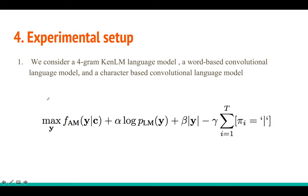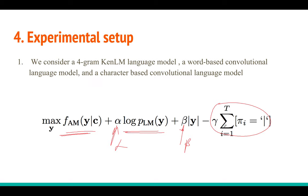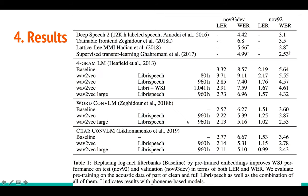The decoding step is: compute the acoustic model score, compute the language model score, and scale the language model score by a parameter alpha. You also consider the length of your hypothesis, multiplied by a parameter beta, plus one more term for how much silence is in the audio. You maximize this whole combined term using beam search.